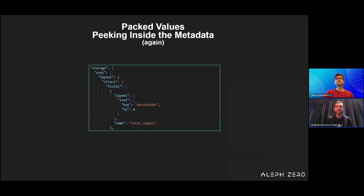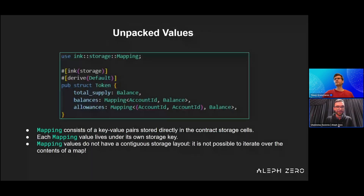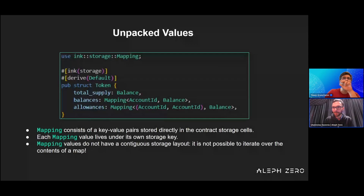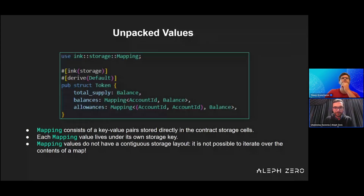Now for unpacked values — surprisingly we return again to the same code snippet — and there are in fact some unpacked values in there as well, namely Mapping. Mapping is another type defined in the storage crate. It behaves a bit differently from Balance. It consists of key-value pairs as well, and these key-value pairs are stored in different contract storage cells separately.